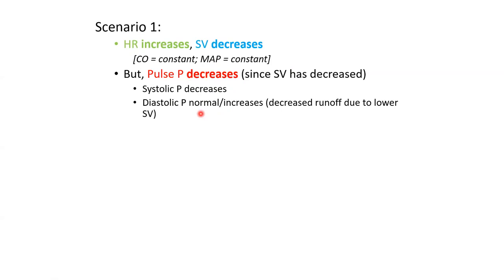Scenario two is the opposite: heart rate decreases, but each contraction of the heart is enhanced. You haven't changed the chronotropy — you've increased the inotropy. Chronotropy is the number of times the heart contracts; inotropy is the force of each contraction.